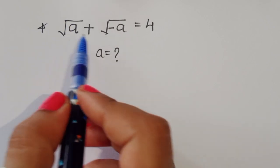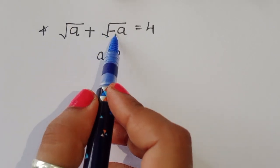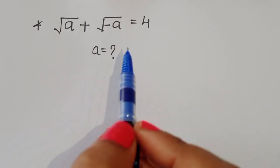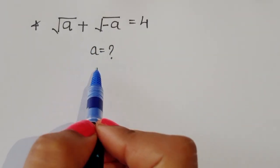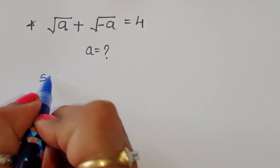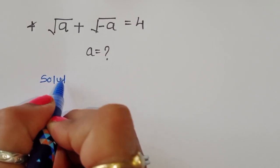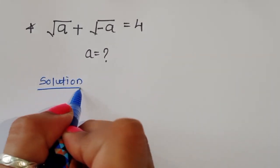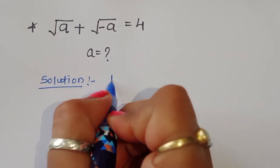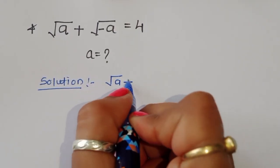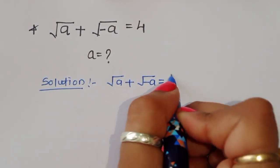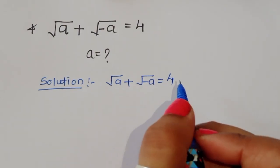The question is: given √a + √(−a) = 4, we have to find out the value of a. Let's find the solution. √a + √(−a) = 4.